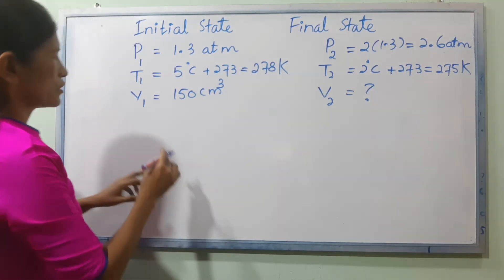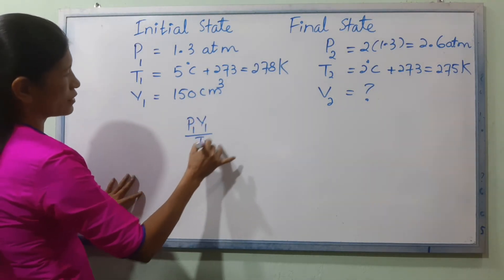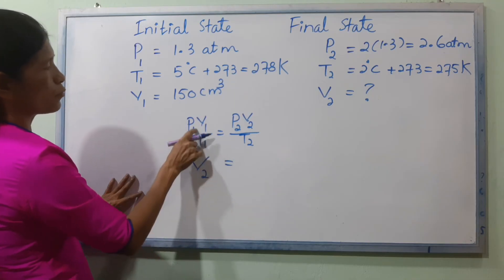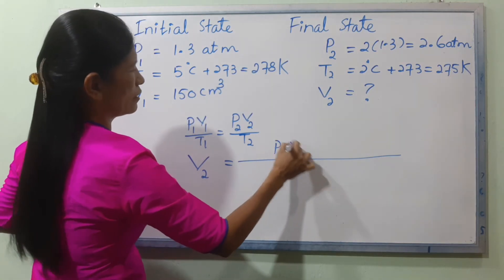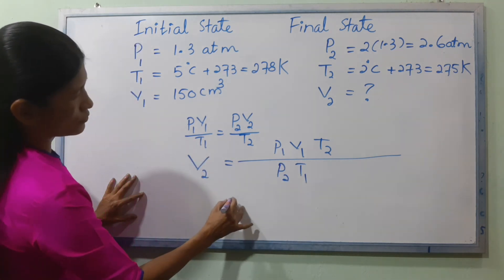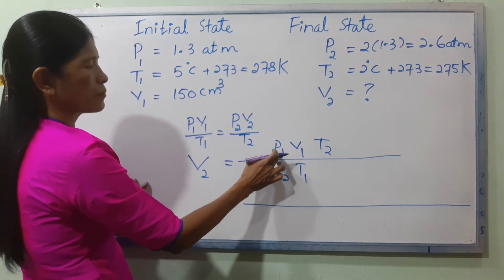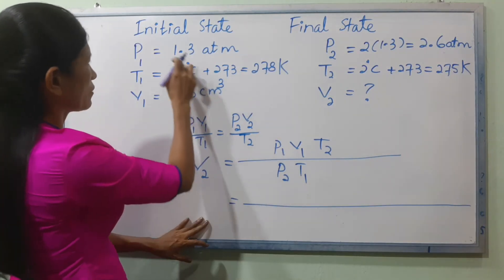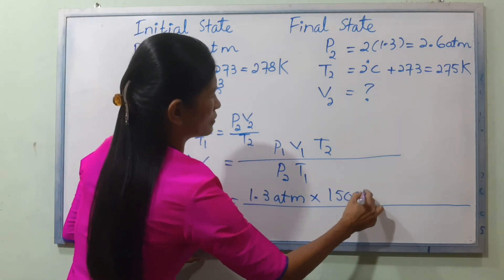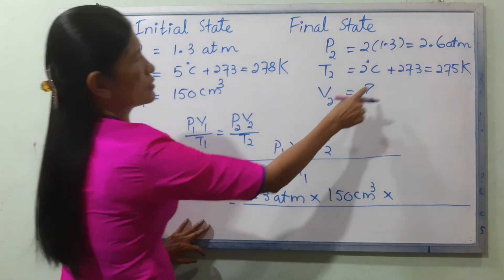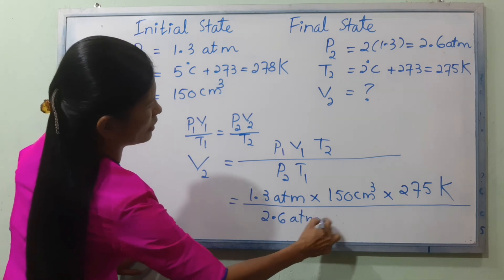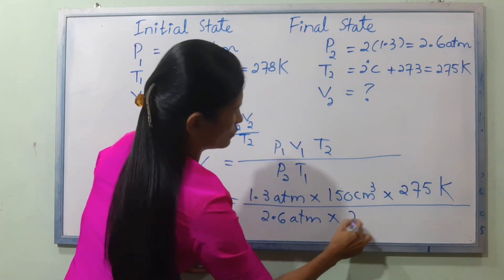Using the combined gas law: P1V1 / T1 = P2V2 / T2. Solving for V2: V2 = P1 × V1 × T2 / (P2 × T1). P1 is 1.3 ATM, V1 is 150 cm³, T2 is 275 Kelvin, P2 is 2.6 ATM, and T1 is 278 Kelvin.